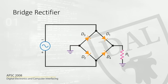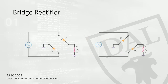Here is a bridge rectifier. This might look a little complicated, but it is not. Power always flows from positive to negative. During the positive half cycle, the current flows through diode one, goes through the load, then comes back and goes through diode two, and then returns back to the source. That is what happens during the positive half cycle.